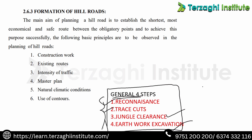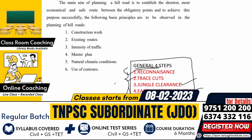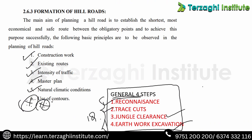So in the four steps, we have a sequence. This relates to construction work, existing roads, and intensity of traffic — what traffic is coming on the road. This is the plan considering natural climatic conditions. The important thing is the use of contours — when we do contour surveying, hill roads design is very useful.